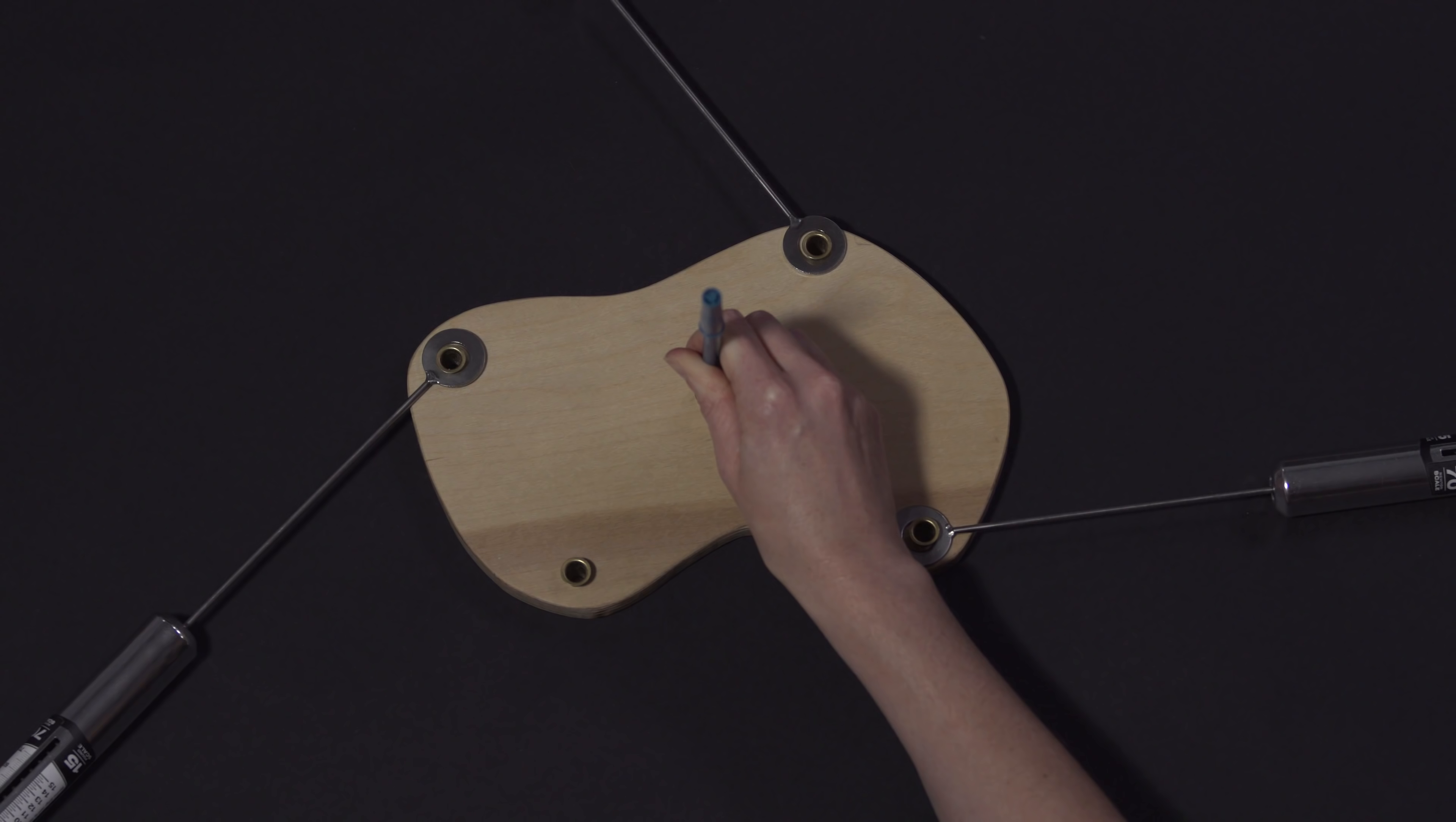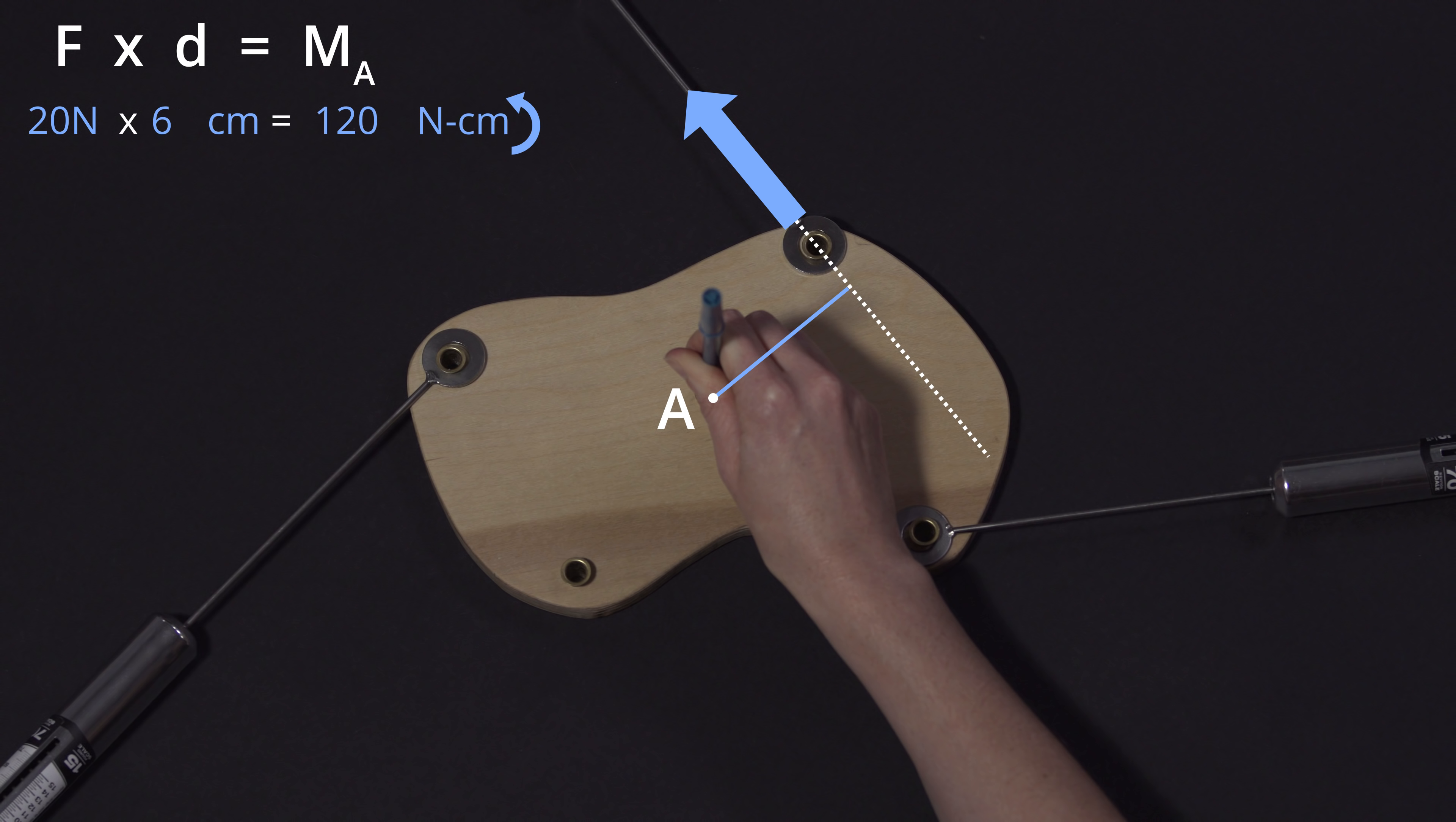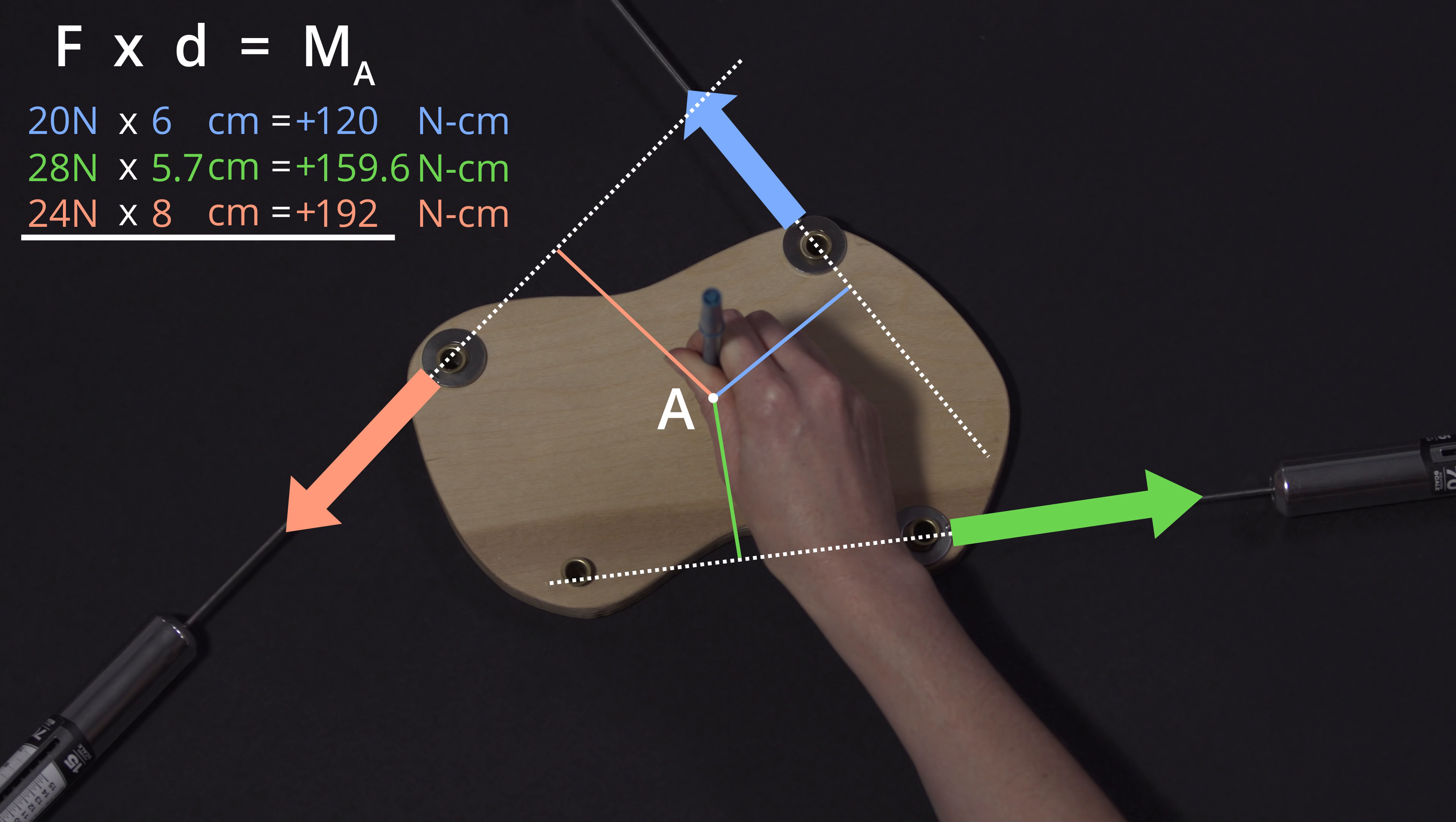Now consider a rigid body that carries three arbitrary forces. To determine if it will rotate, we can take moments about any point A. To calculate the moment created by the first force, we multiply its magnitude by the perpendicular distance from its line of action to A. As you can see, the moment from this force is counterclockwise, so we call it positive. We can do the same for each of the other applied forces, and we find that there is a net counterclockwise moment.